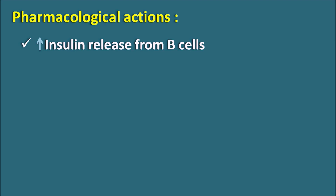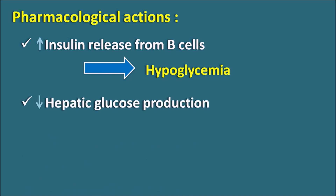The pharmacological actions of sulfonylureas include three important effects. First, they block the ATP-sensitive potassium channels, increasing insulin release from beta cells — mainly responsible for controlling plasma glucose. However, this also means sulfonylureas can increase plasma insulin levels, which may result in hypoglycemia, an important side effect. Second, they decrease hepatic glucose production by promoting insulin release, which reduces glucose output from the liver. Third, to a lesser extent, they increase insulin sensitivity.